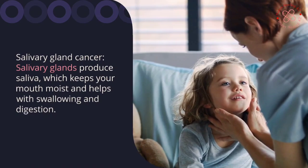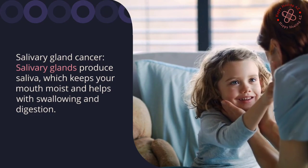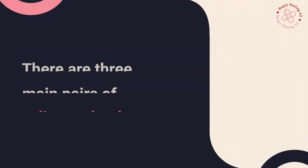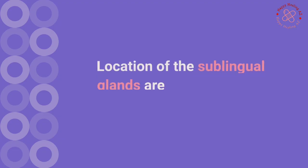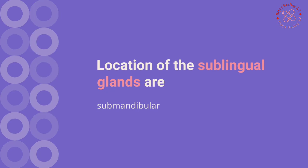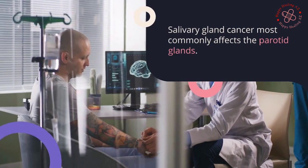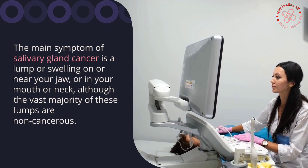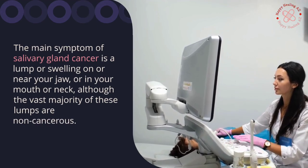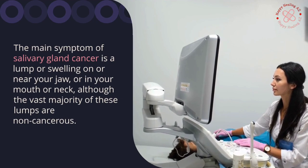Salivary gland cancer: salivary glands produce saliva, which keeps your mouth moist and helps with swallowing and digestion. There are three main pairs of salivary glands: parotid glands, sublingual glands, and submandibular glands. Salivary gland cancer most commonly affects the parotid glands. The main symptom is a lump or swelling on or near your jaw, or in your mouth or neck, although the vast majority of these lumps are non-cancerous.